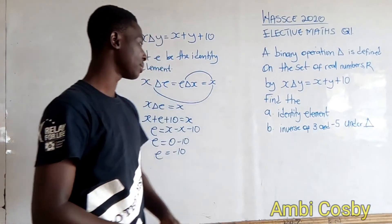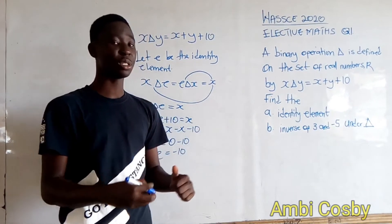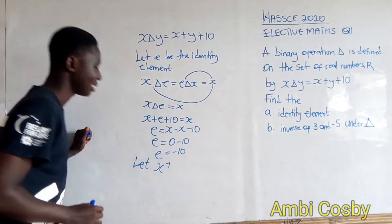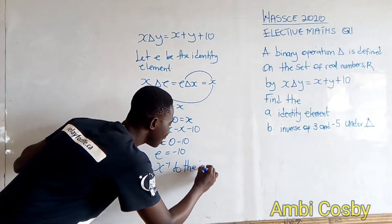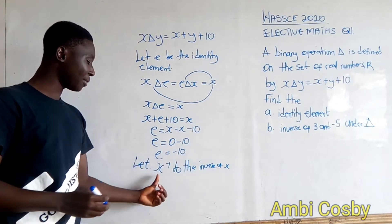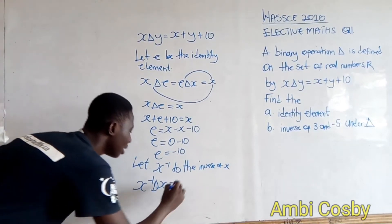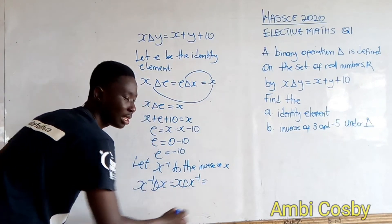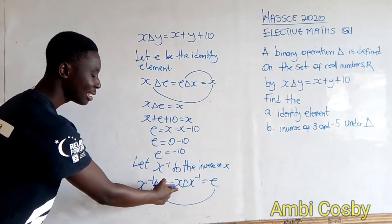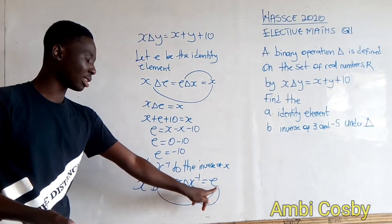We know the identity element but we need to develop an equation for the inverse. Let x⁻¹ be the inverse of x. If x⁻¹ is the inverse of x, then it follows that x ∗ x⁻¹ = e, the identity element. Either x⁻¹ ∗ x or x ∗ x⁻¹ equals the identity element — I'm choosing x ∗ x⁻¹ = e.